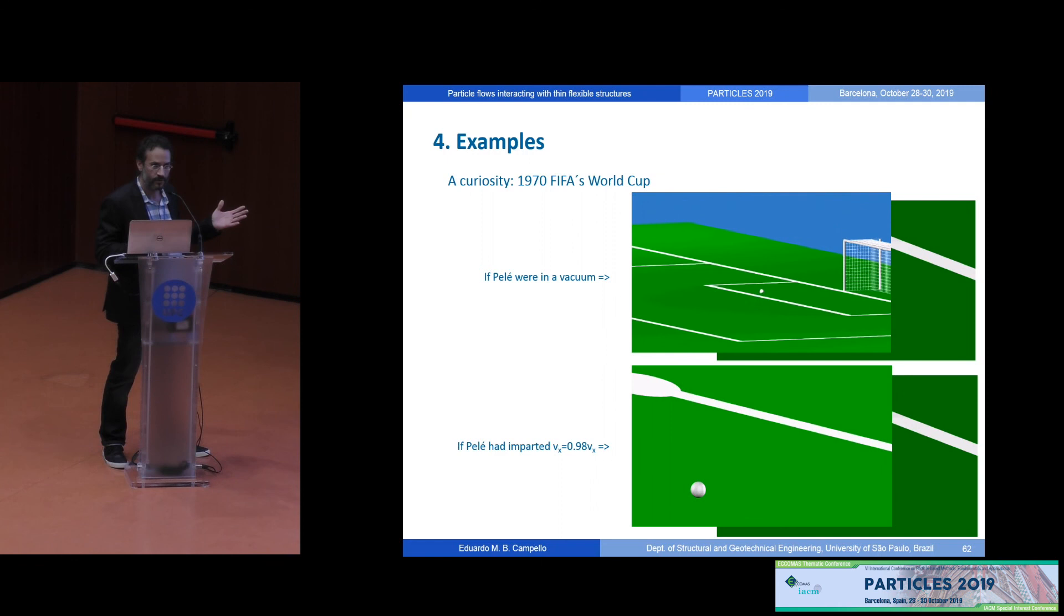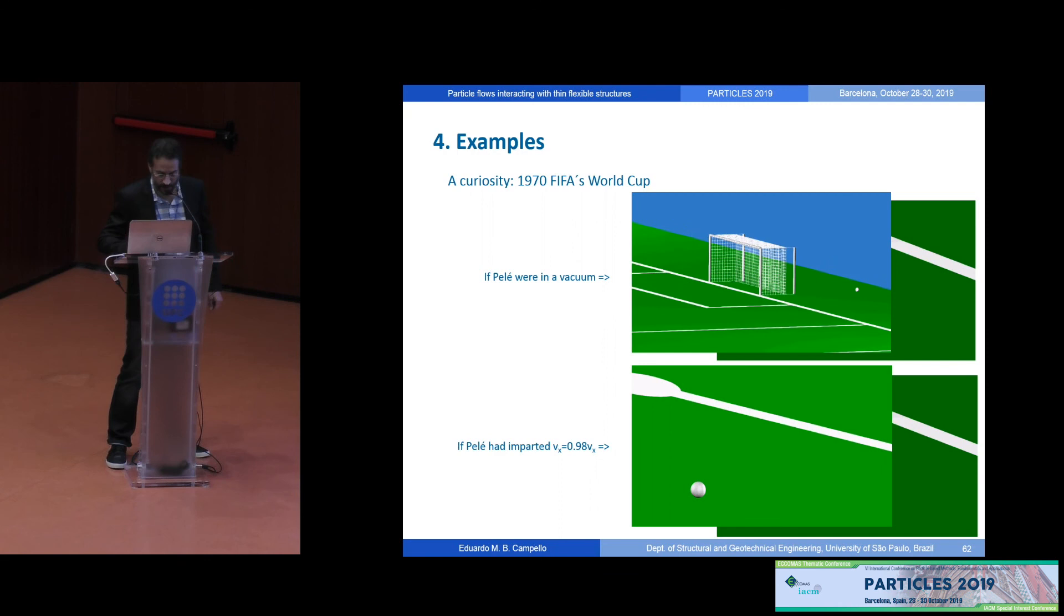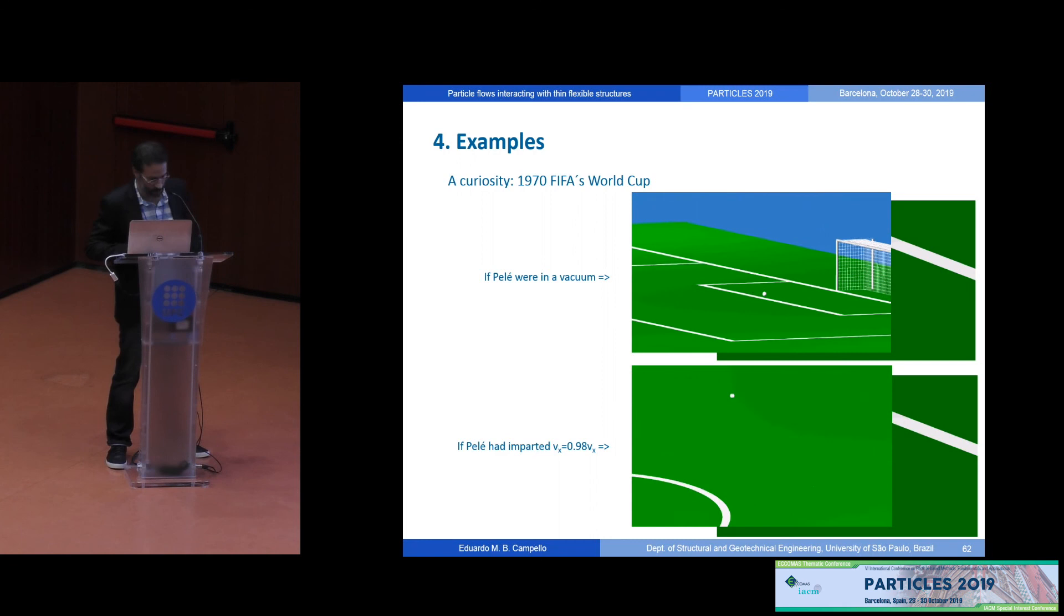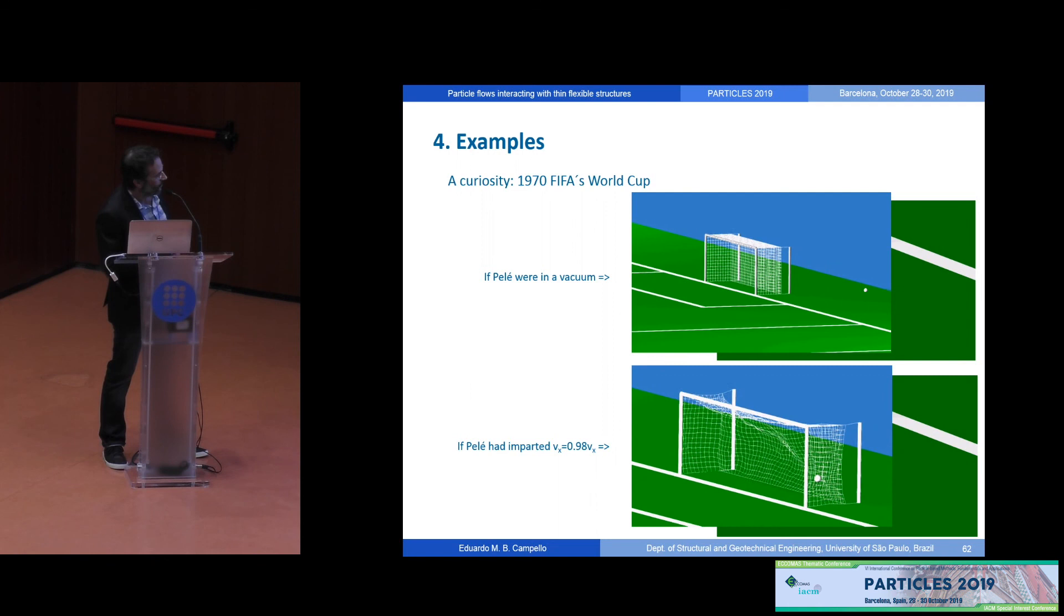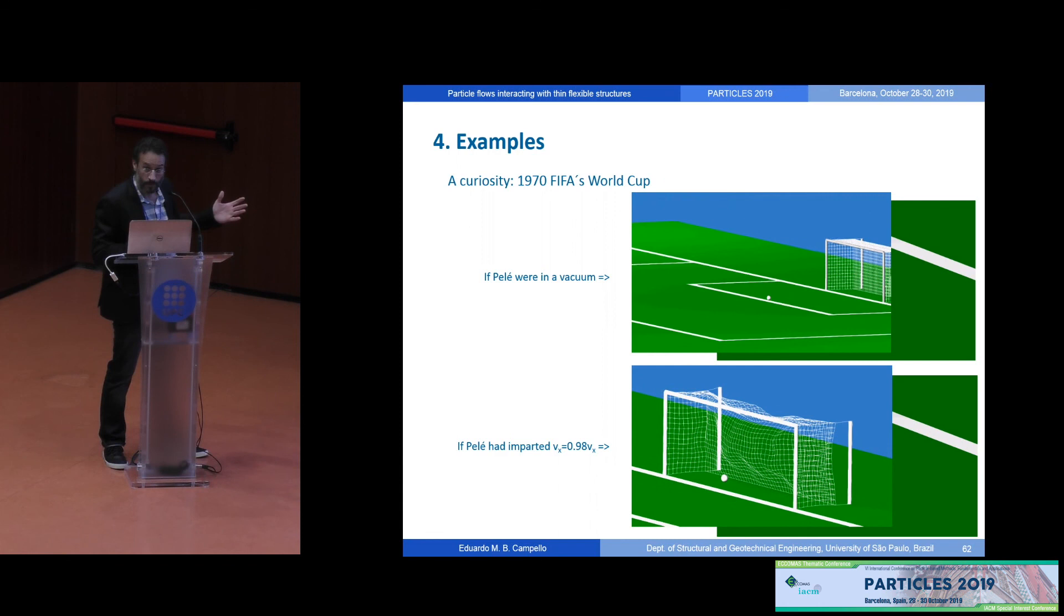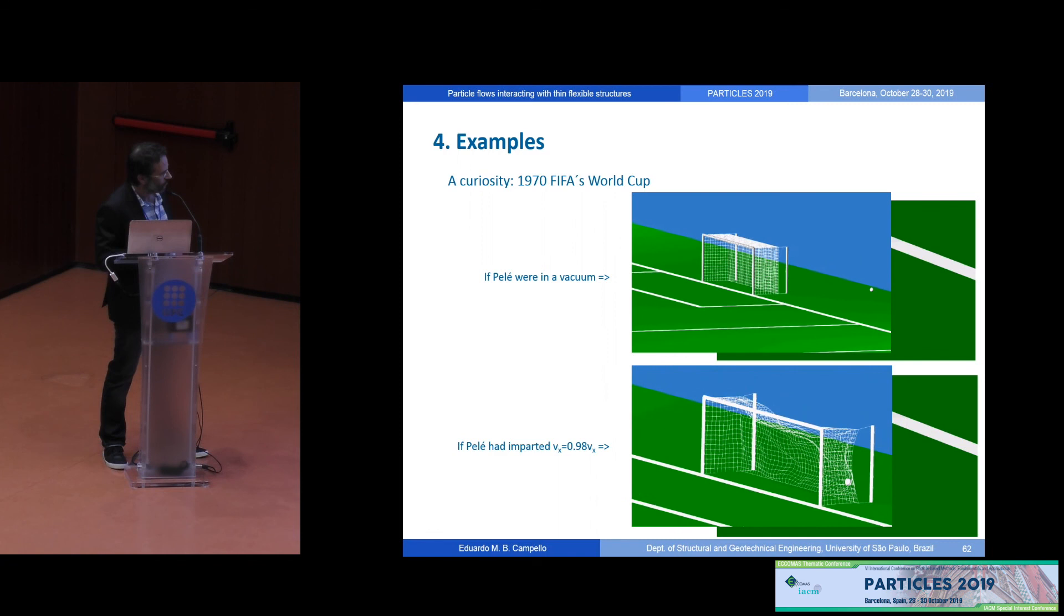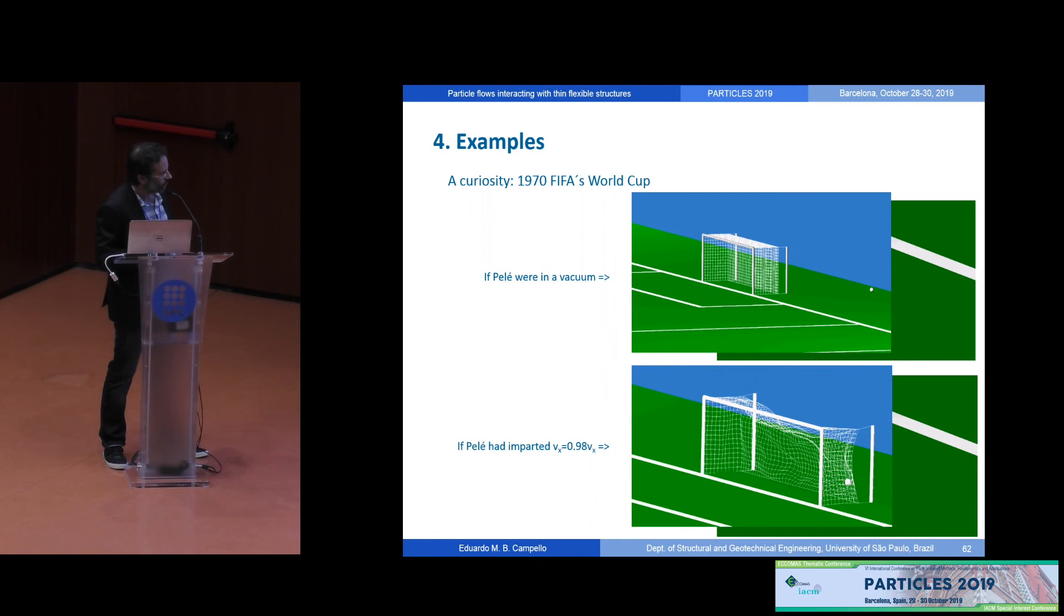And then people say okay if he were in a vacuum maybe he would score. Let's see what would happen if he were in a vacuum. He wouldn't. See the ball doesn't lift too much because there is no magnus force, there is no lift effect from the air through spinning. However, if Pelé had imparted a slightly less lateral velocity to the ball, you can see, goal. This is a very complicated interaction between a particle and very flexible beams. You can see here. Well I'm almost, not almost actually but let me move to my last slide before I go to my conclusions.